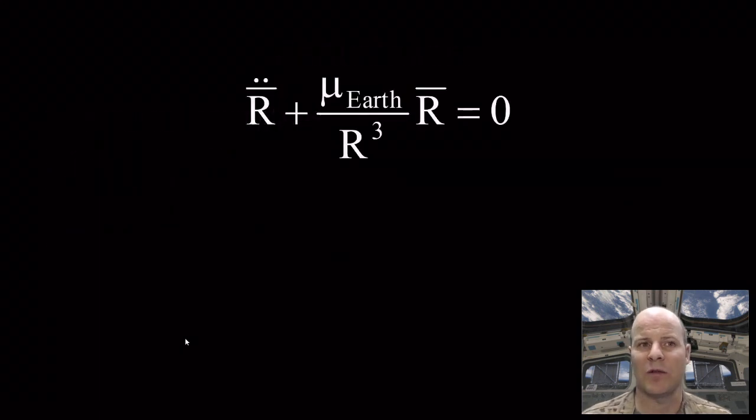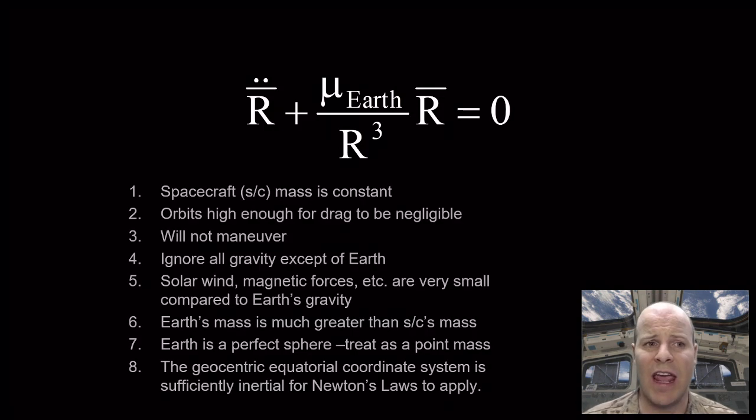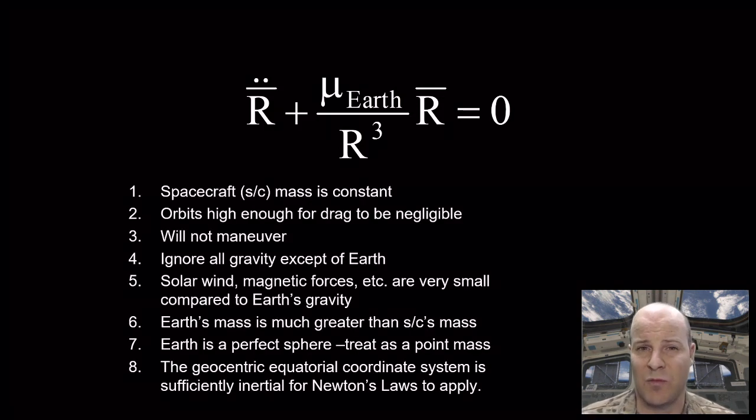To begin with, we'll look back at the restricted two-body equation of motion. Here we describe a satellite's motion around the Earth using Newton's second law and the universal law of gravitation, and a whole host of assumptions, which is why we called it the restricted two-body equation of motion.